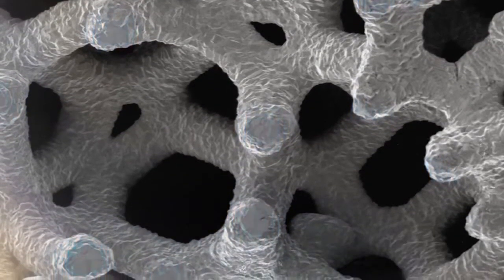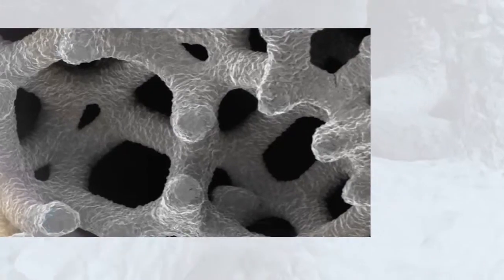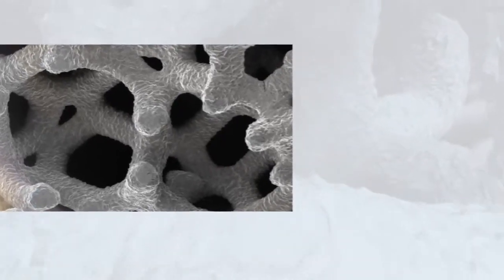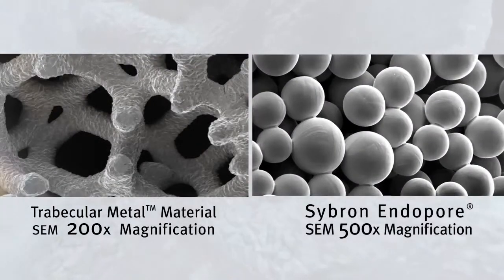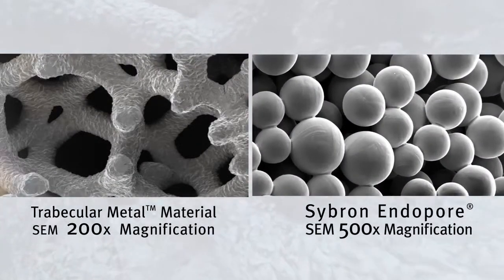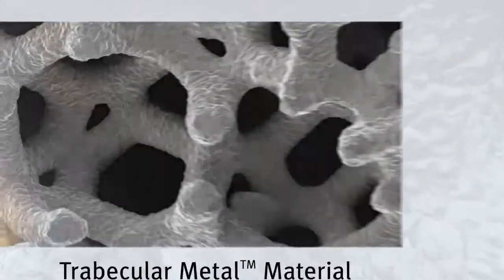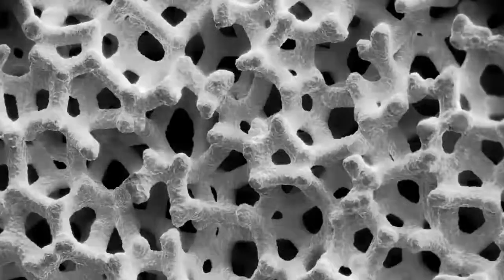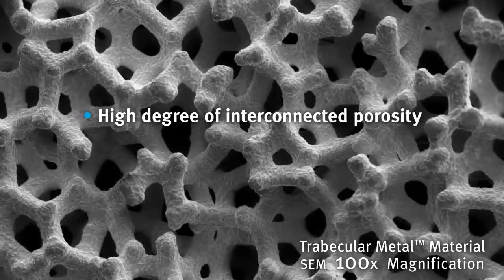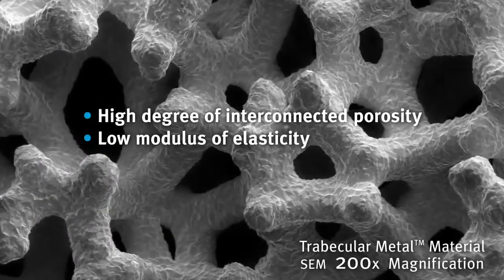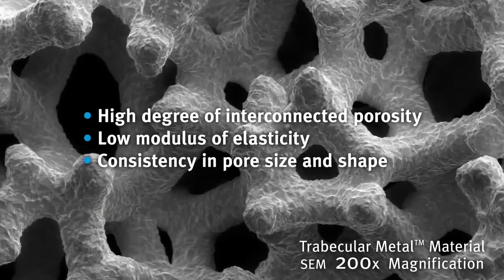While other manufacturers have tried to mimic the attributes of trabecular metal technology, sintered bead and other conventional porous coatings and materials differ significantly from trabecular metal material's high degree of interconnected porosity, low modulus of elasticity, and consistency in pore size and shape.